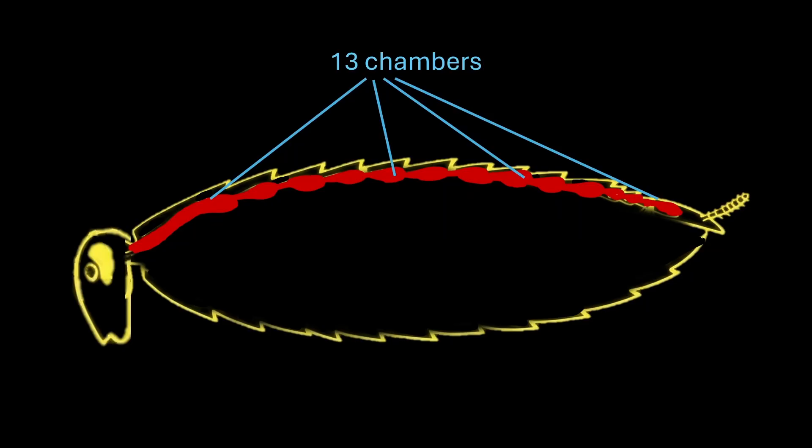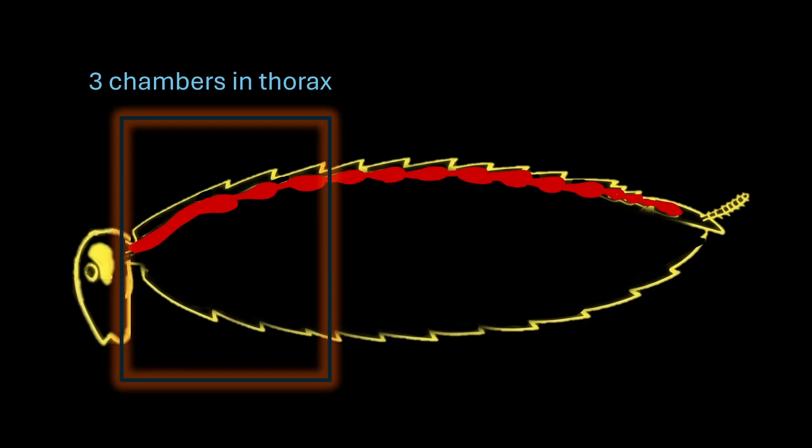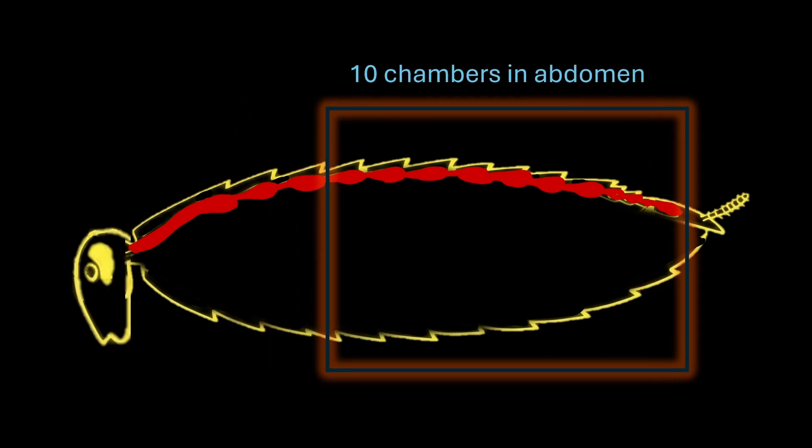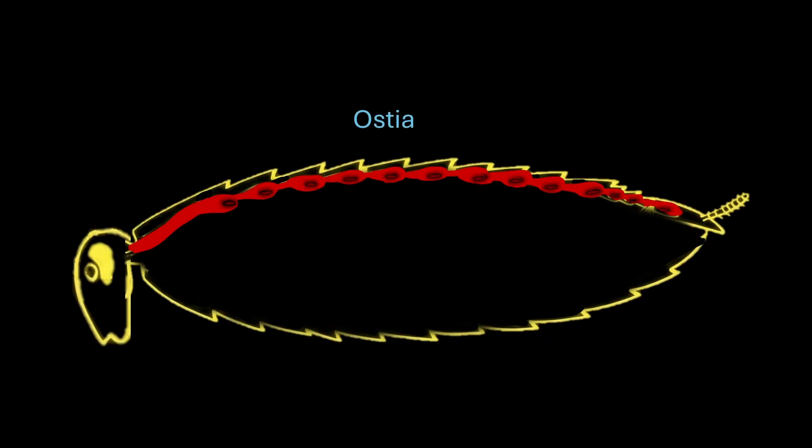Rather, this heart is segmented and has 13 chambers. Three chambers are present in the thorax region while 10 chambers are present in the abdominal region. Each chamber has small valve-like openings which are known as ostia.